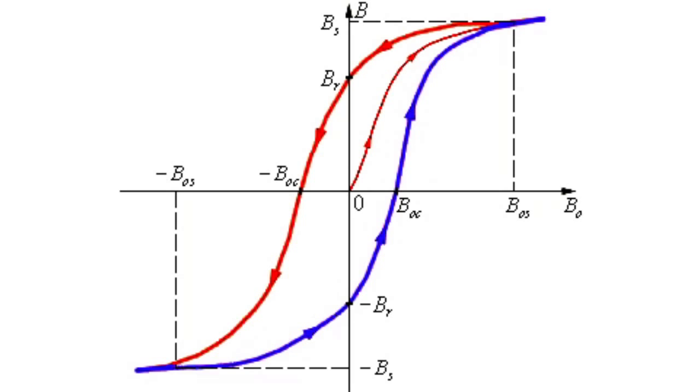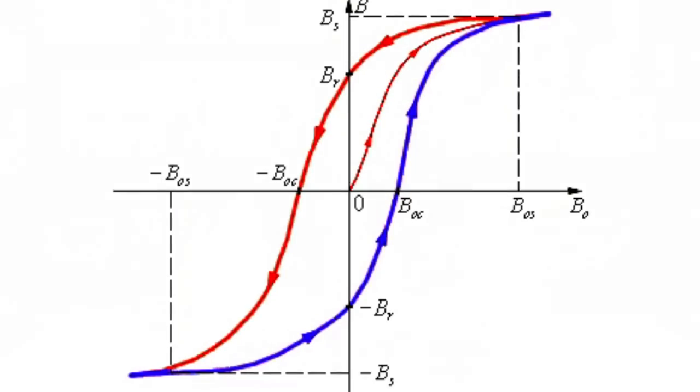The sample demagnetized from the point A to the point B occurs according to the reverse curve. Thus, due to cyclic alteration of the field, the curve characterizing the alteration of the magnetic moment of the sample forms the loop of magnetic hysteresis.